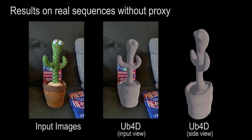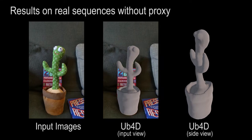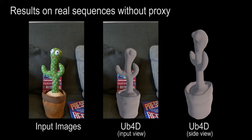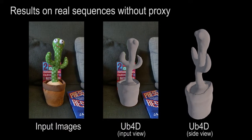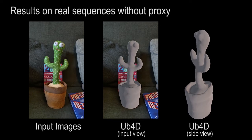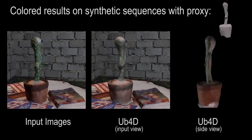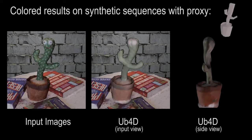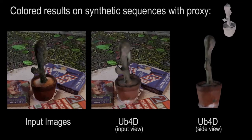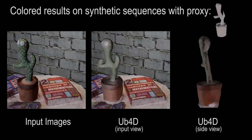We test our approach on a real sequence with a deforming cactus toy. Unbiased 4D achieves an accurate overlay onto the input view and also results in a plausible and temporally consistent side view. Even if the cactus is deforming more intensely, our method can still handle the large deformations due to our novel scene flow loss.